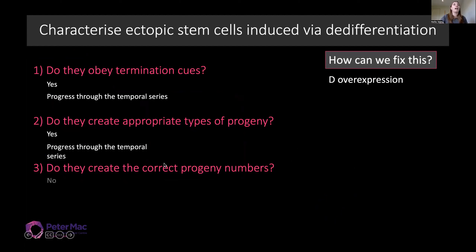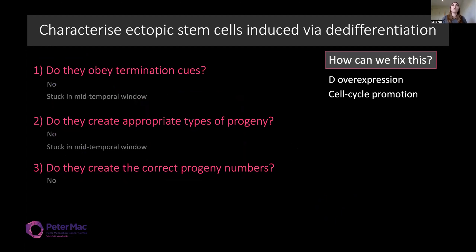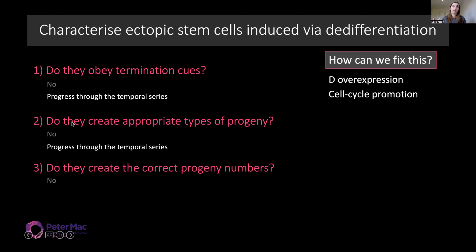Lastly, we looked at whether the ectopic stem cells were able to create correct progeny numbers with dichaete overexpression. Interestingly, they still weren't able to, showing that these two pathways — temporal progression and cell cycle regulation — are probably more in parallel rather than connected. However, when we overexpressed certain members of the cell cycle, it also allowed these ectopic stem cells to progress through the temporal series, create the correct progeny numbers, and terminate on time.